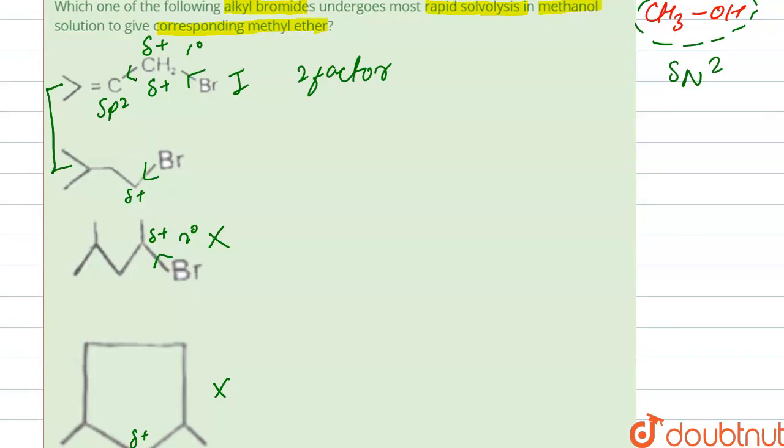Next, one and two both have the same primary carbocation, but the positive charge is more in one with respect to two. So our correct option is option A.